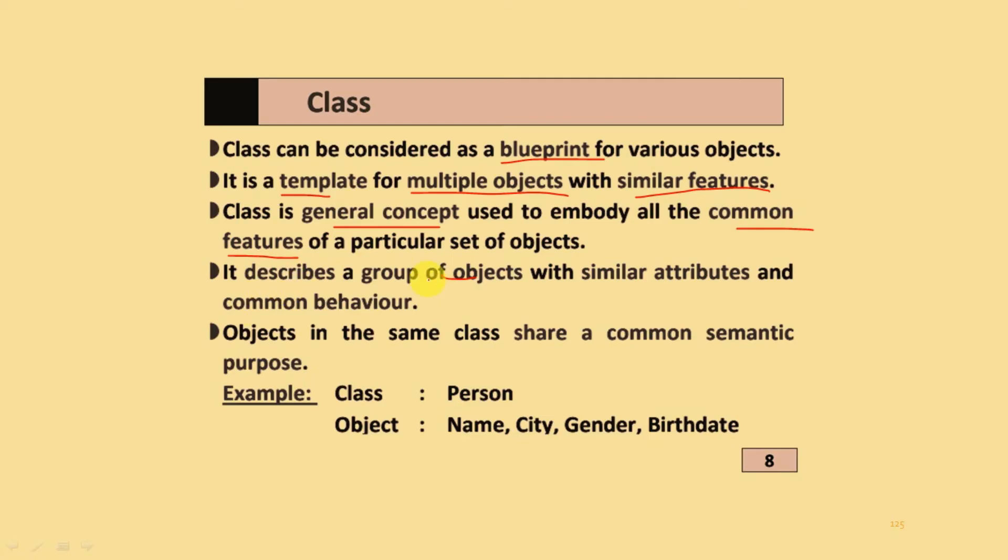It describes a group of objects with similar attributes and common behavior. Objects in the same class share a common semantic purpose. For example, class is Person and objects are Name, City, Gender, and Birthdate.